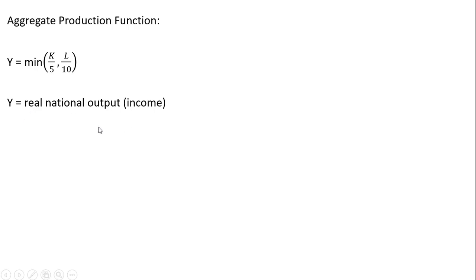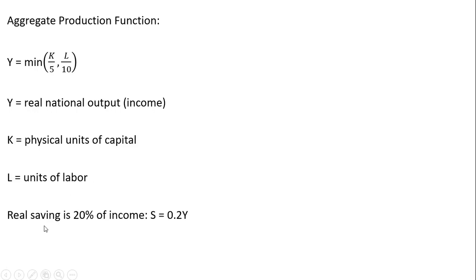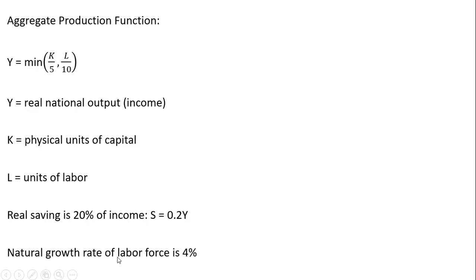Y is real national output or income, K is physical units of capital, and L is units of labor. We're going to assume in this economy that the real saving rate is 20 percent — 0.2 times Y, aggregate output and aggregate income. And the growth rate of the labor force is 4 percent, so L grows at 4 percent a year.